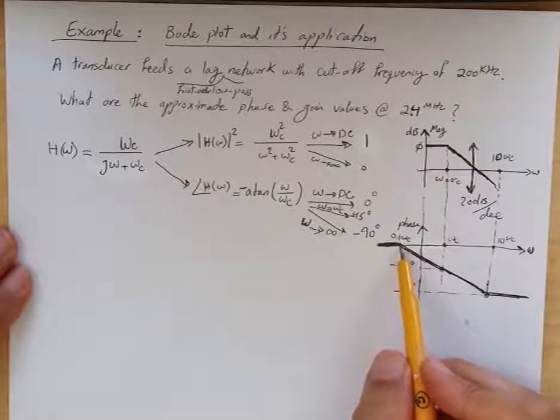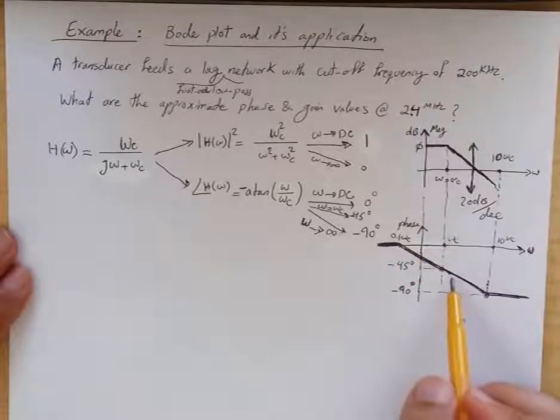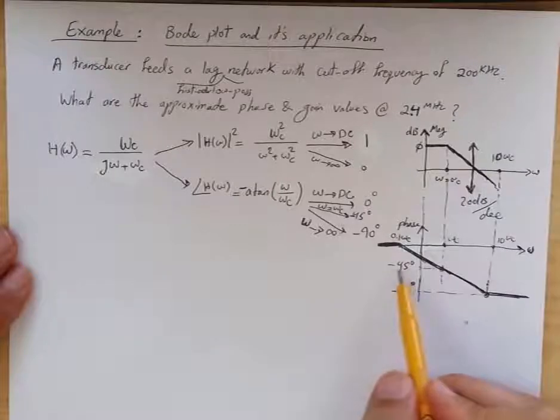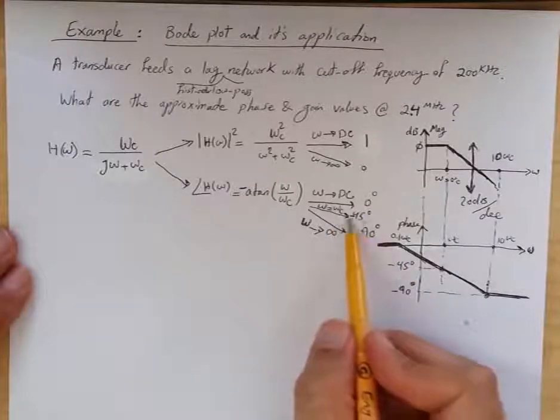Beyond that point, the phase starts linearly going down, and at ω equal to ωc, it becomes minus 45 degrees, as we discussed.